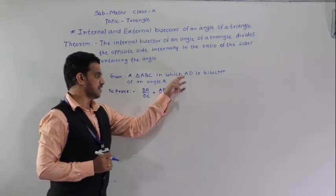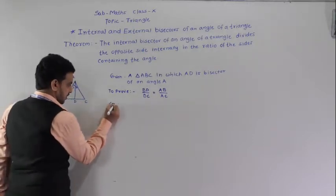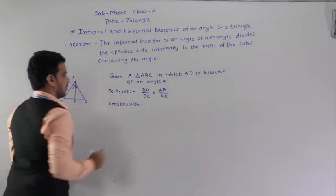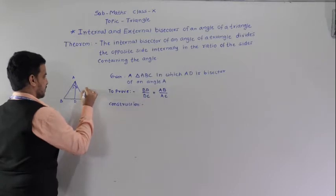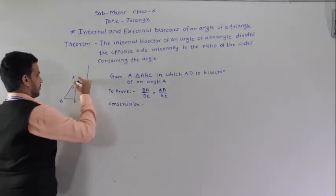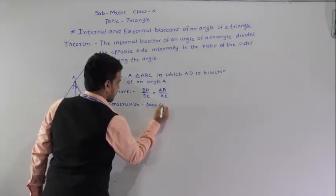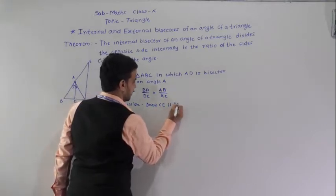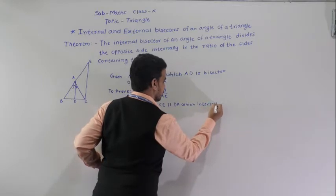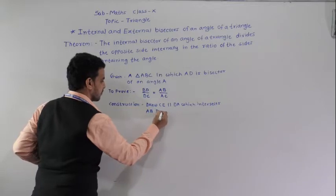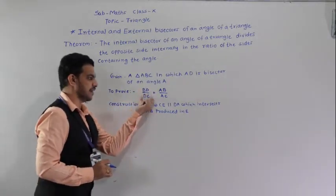In triangle ABC, AD is the bisector of angle A. We have to prove that BD by DC is equal to AB by AC. For construction, we draw CE parallel to AD, which intersects AB produced at E.